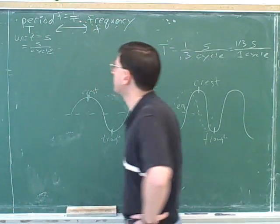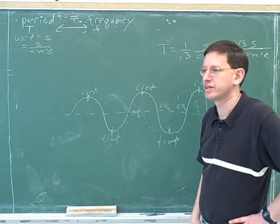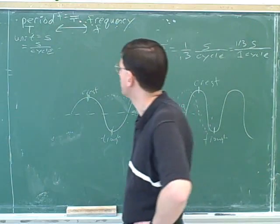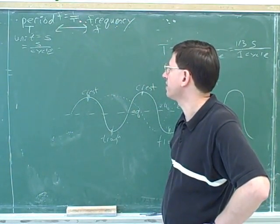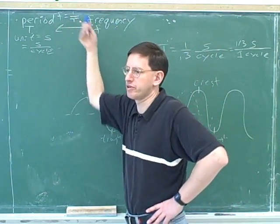So above the arrow, we've written that the frequency is 1 over the period. So you want to draw it on your page, pretty much like I have it on the board. We have two concepts, and then above the arrow that links the concepts, we'll see how we go back and forth between them.